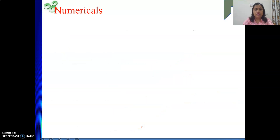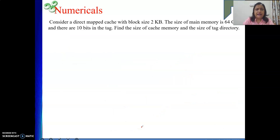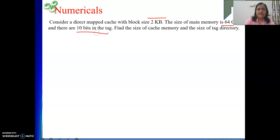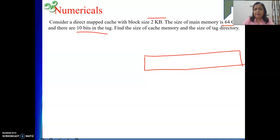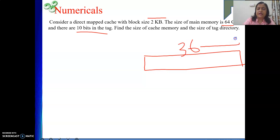One more numerical: a direct map cache with block size of 2 KB, main memory size of 64 GB, and 10 bits in the tag. Find the size of cache memory and the size of the tag directory. The main memory address size is 64 GB = 2^6 × 2^30, so the total address length is 36 bits.